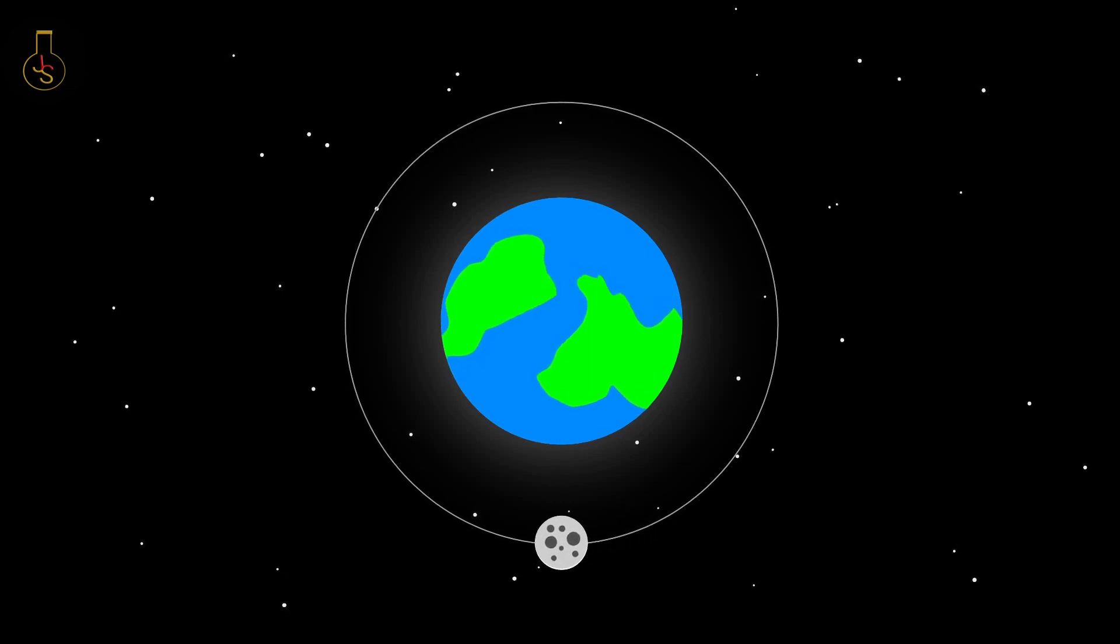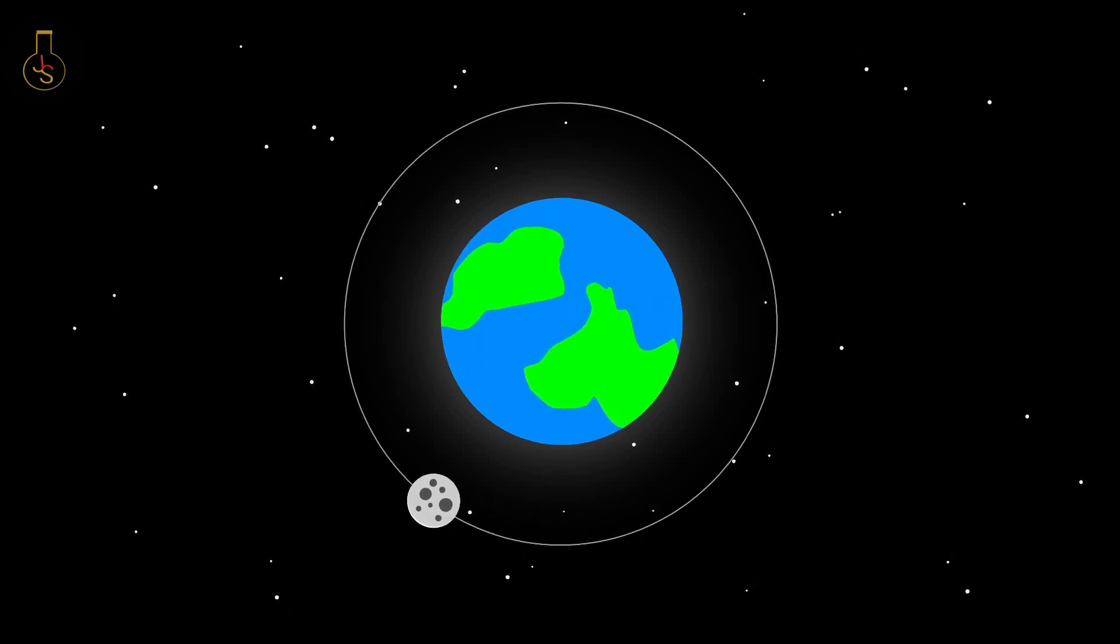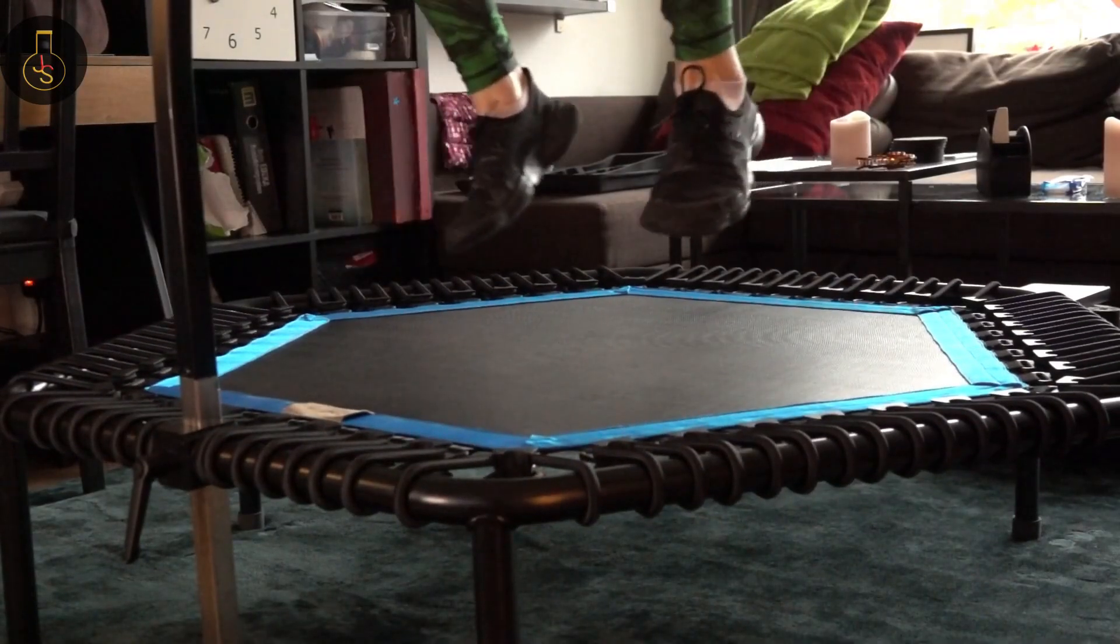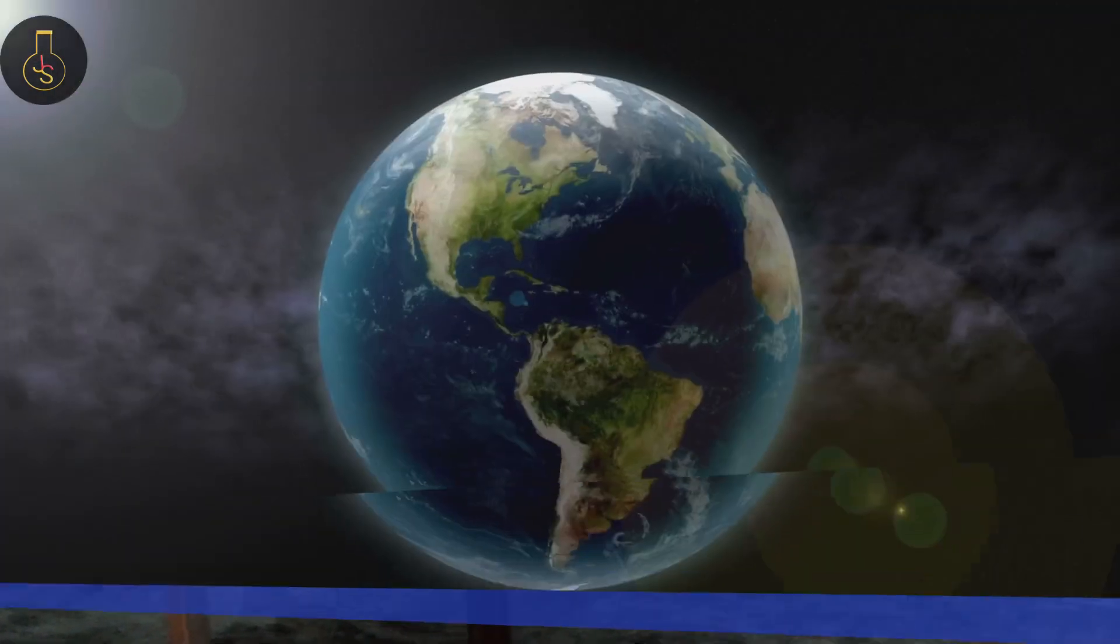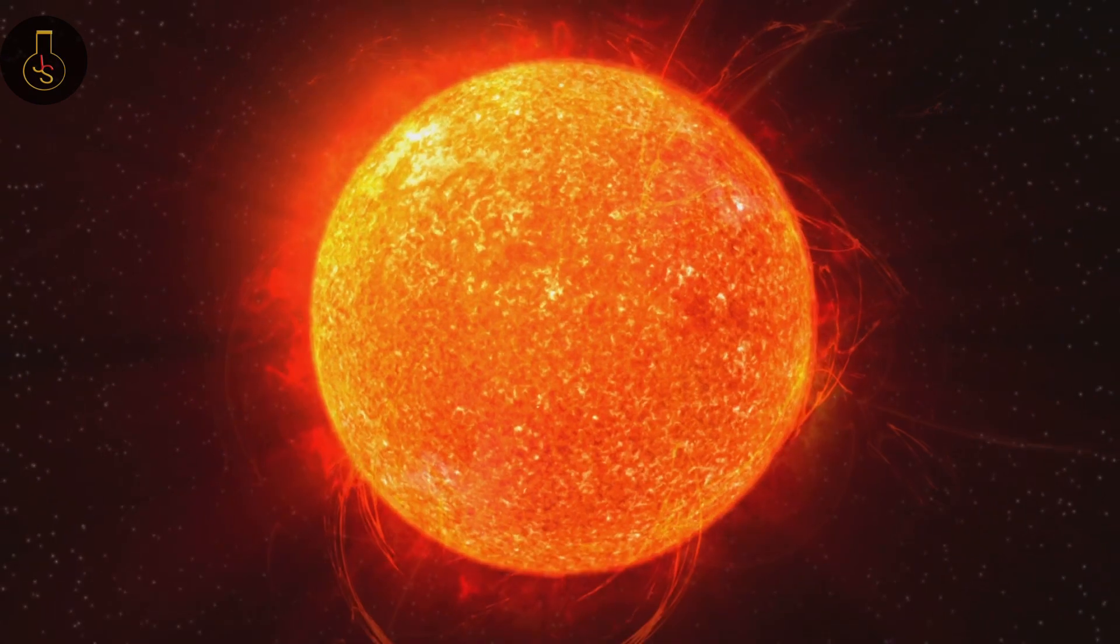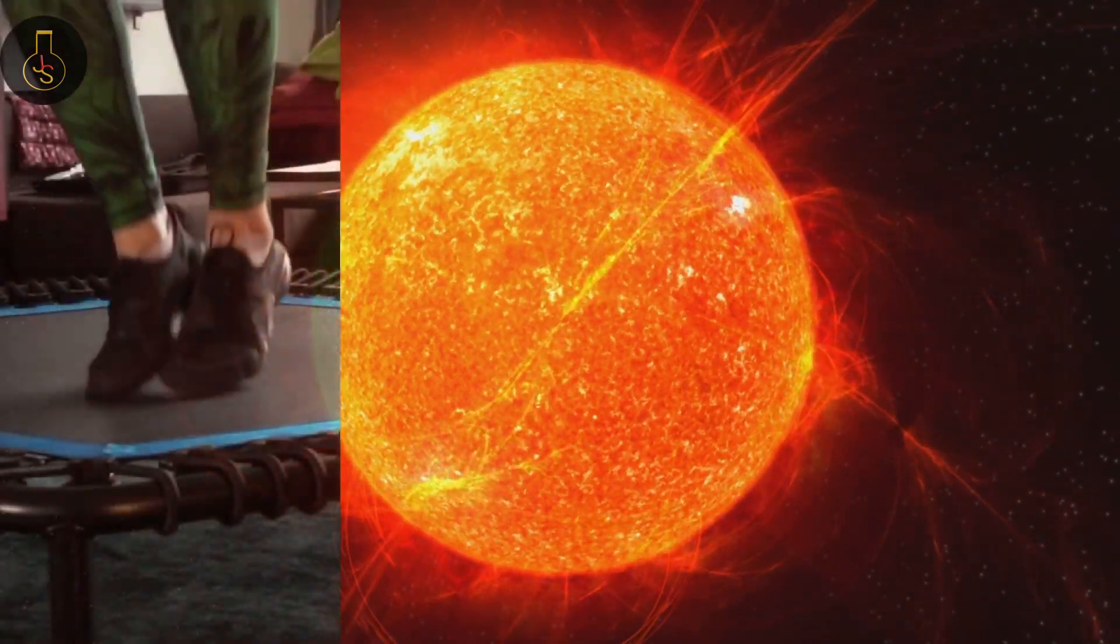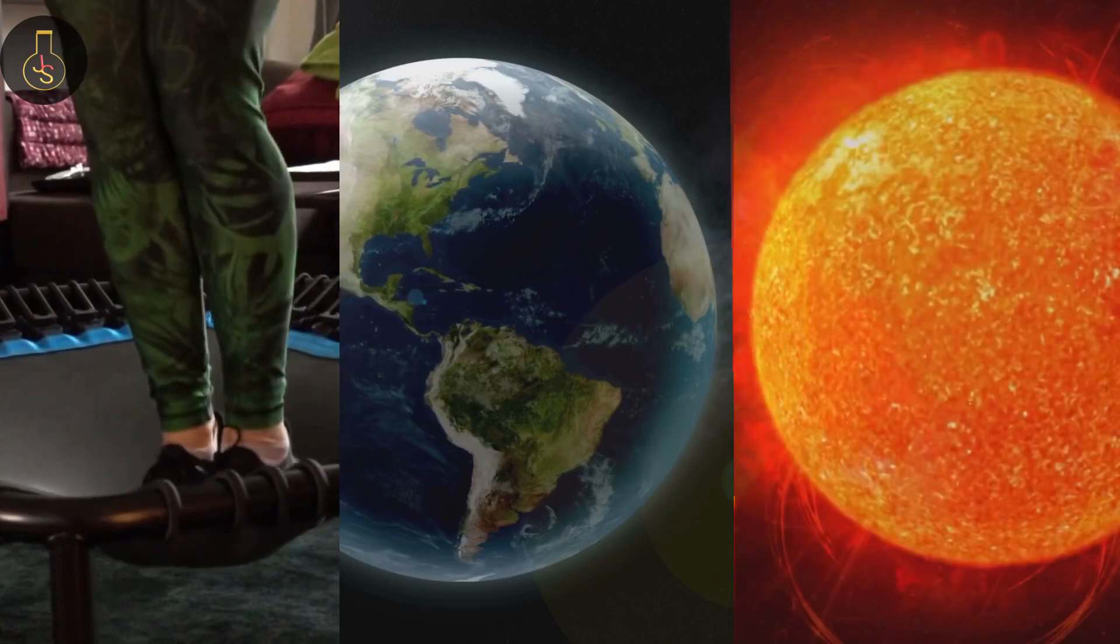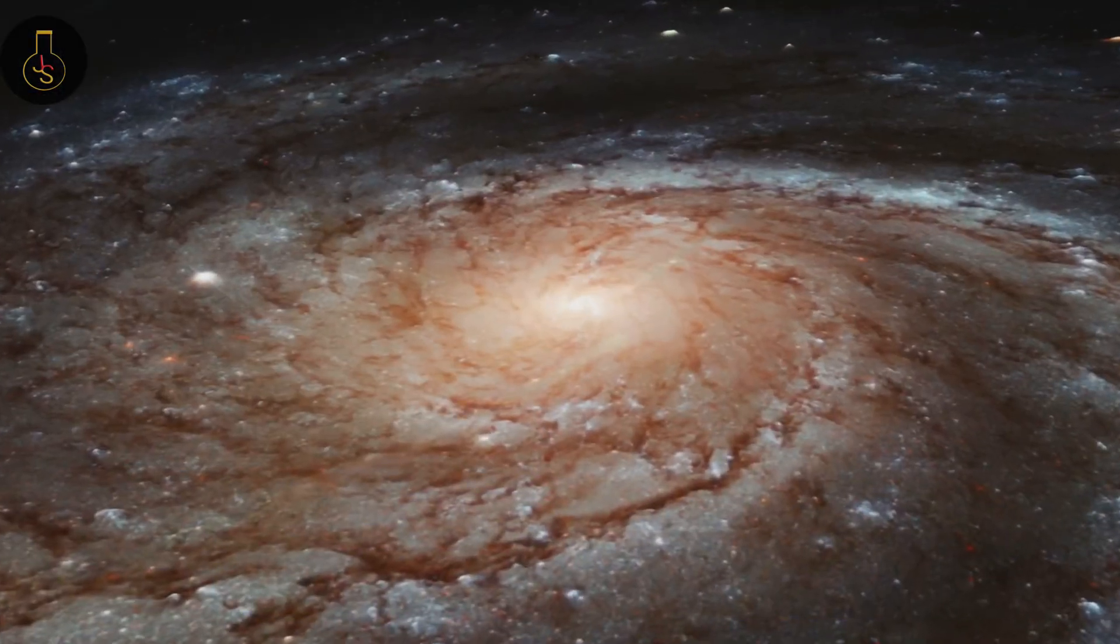Everything in the Earth is constantly falling. When you jump, you fall toward the center of the Earth. The Earth and us fall toward the center of the sun. Then, we, the Earth and the sun fall toward the center of the universe.